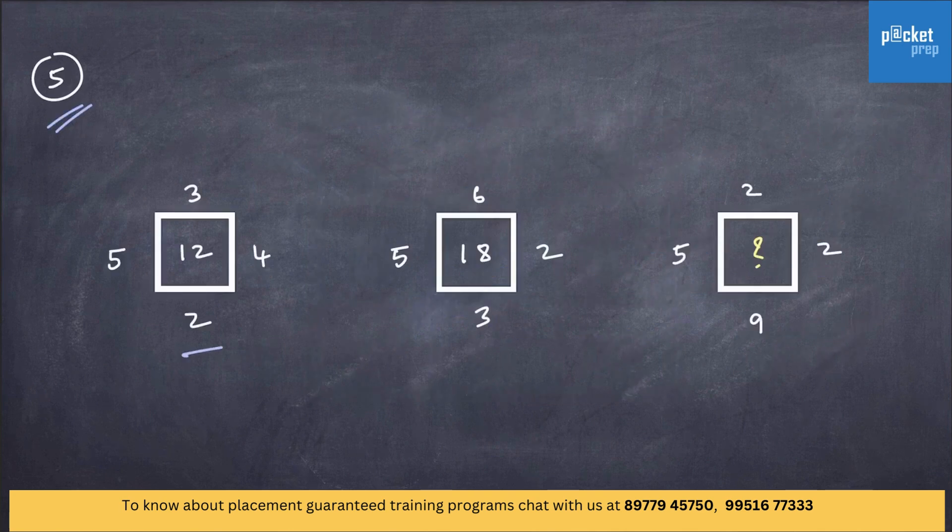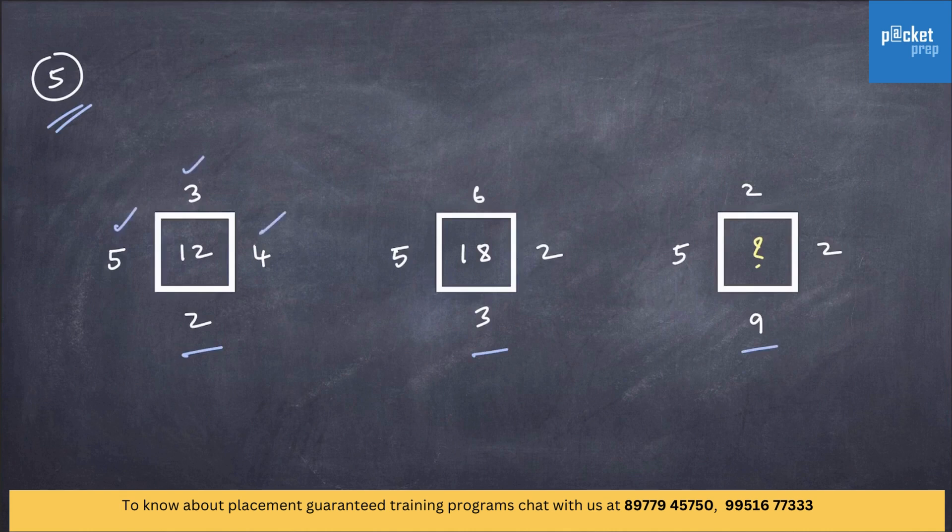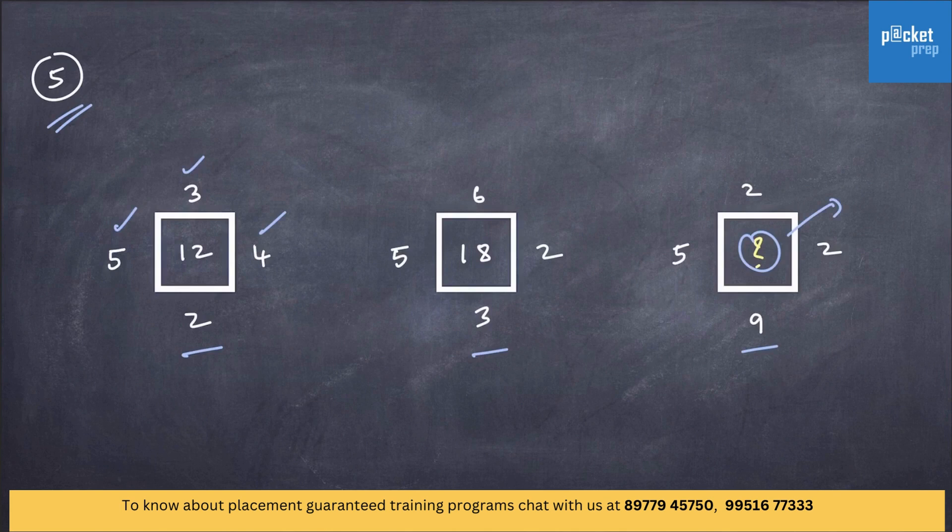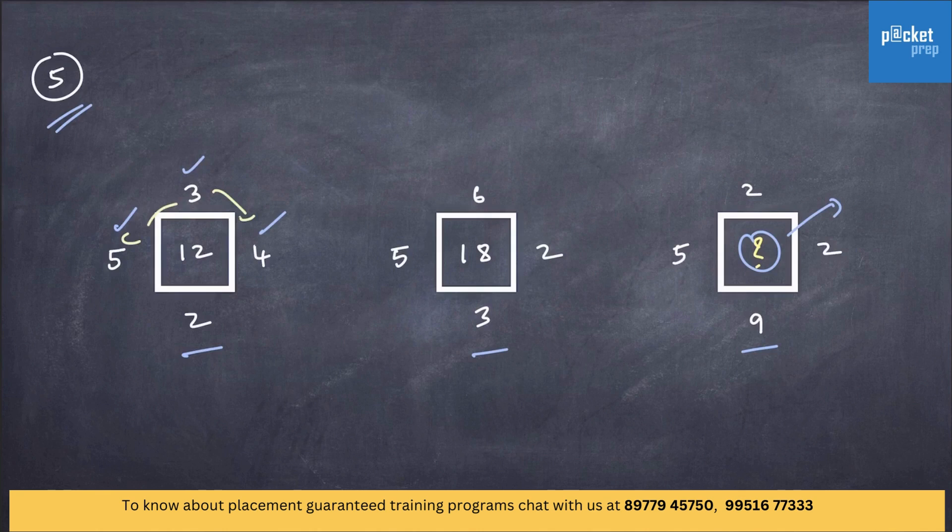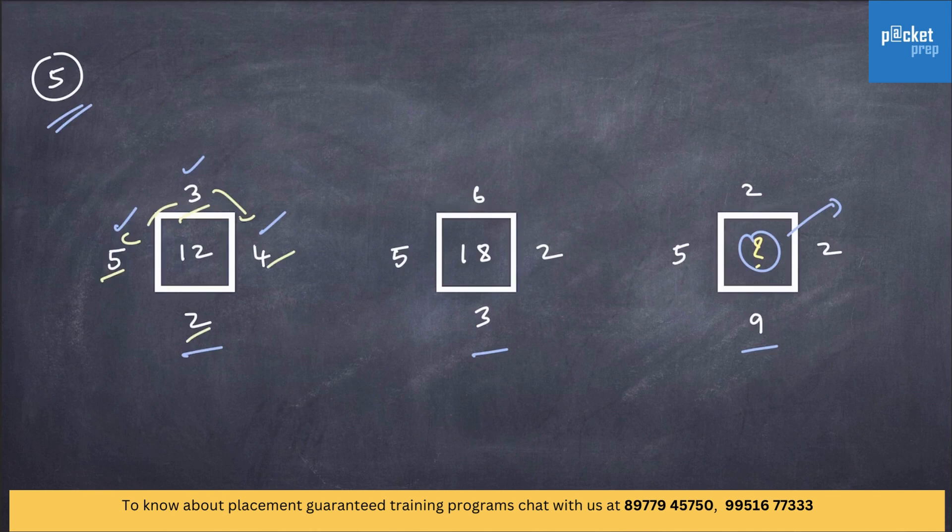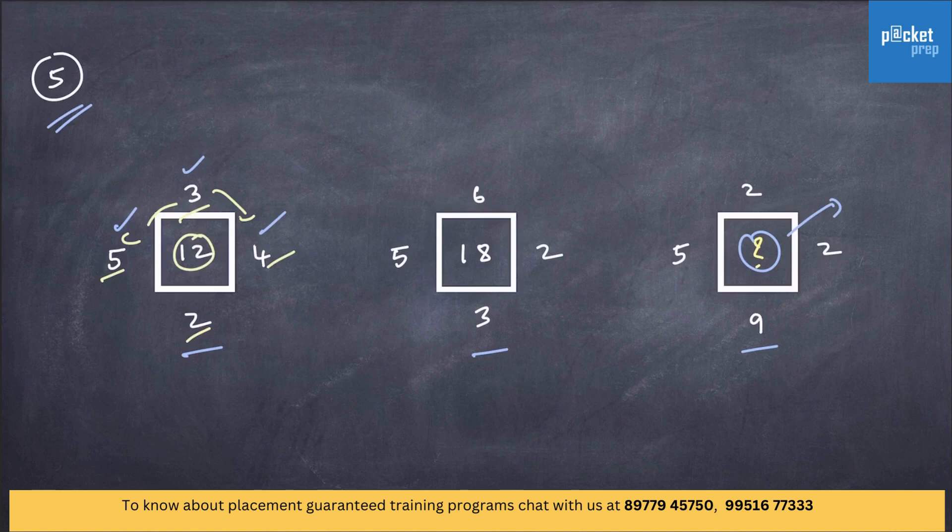Last question. There are three square figures given and few digits given. Let's find out the missing term. We will brainstorm ourselves. We will try different patterns and see which works out. In this case, the product of the numbers which are outside of the box divided by 10 will give us the inside value. Confused?